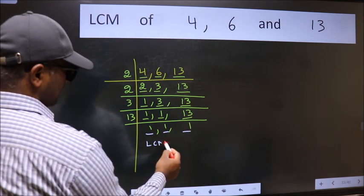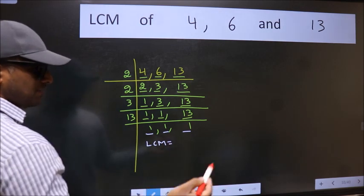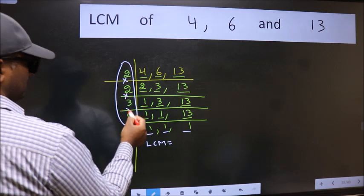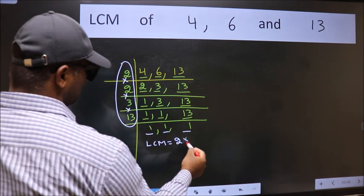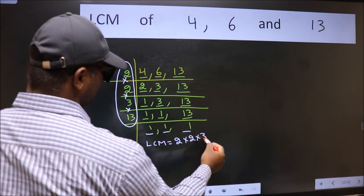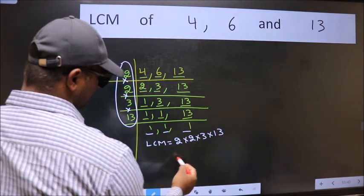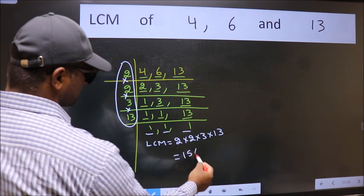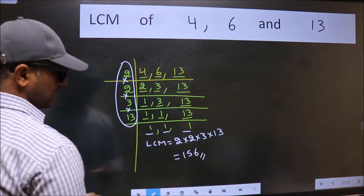So our LCM is, LCM is the product of these numbers. That is 2 into 2 into 3 into 13. When we multiply these numbers, we get 156 is our LCM.